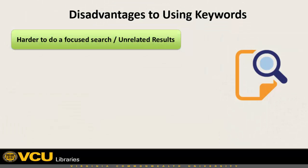As mentioned, a big drawback to using keywords is that it's very hard to do a focused search, because your results will have a lot of unrelated or not useful citations in them. Largely, this is because of how the database searches every field of the citation.